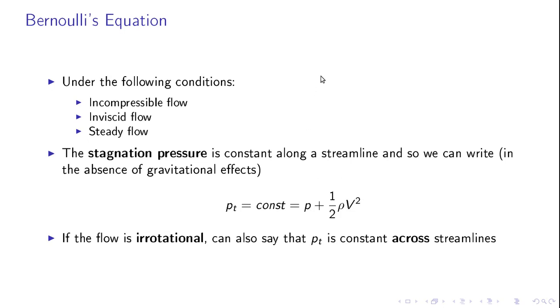Further, if the flow is irrotational, which means that the flow has no vorticity, we can also say that the stagnation pressure is constant across streamlines and Bernoulli's equation can be used between any two points in the flow, not only along a given streamline.